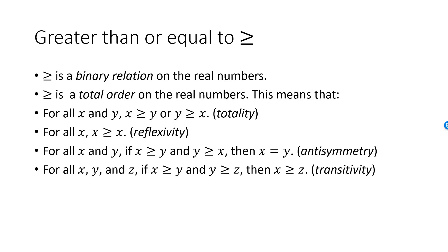The fourth and final condition is transitivity. If you have a number x which is greater than or equal to another number y, and this number y is greater than or equal to a third number z, then it must also be the case that x is greater than or equal to z. Transitivity is also satisfied by the greater than relation. Greater than or equal to is not the only binary relation which is a total order that you know of — less than or equal to is also a total order, which you can convince yourself of by checking each of the four conditions.